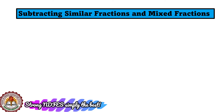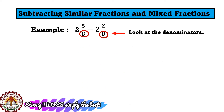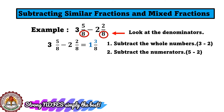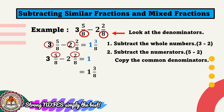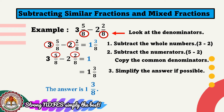Let us have an example of subtracting similar fractions and mixed fractions. Example: 3 and 5 eighths minus 2 and 2 eighths. The denominators are the same. Step 1, subtract the whole numbers: 3 minus 2 equals 1. Then subtract the numerators: 5 minus 2 equals 3. Copy the common denominator. Our answer is already in the lowest term. So our answer is 1 and 3 eighths.